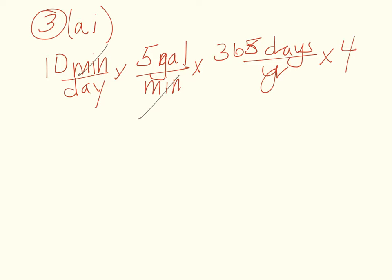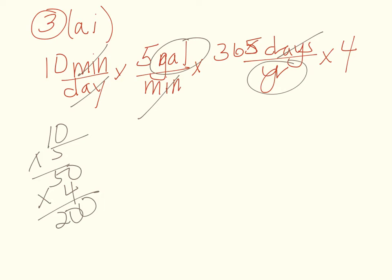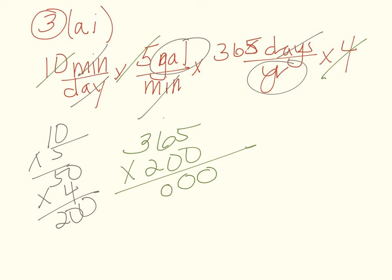So minutes cancel and days cancel and we're ending up with gallons per year for the family. And that's what we want. So I need to do this math. 10 times 5 is 50 times 4, so I've got 200 times 365. I'm going to set it up the other way because it's easier: 365 times 200. Then my zeros go here and now I can do 5 times 2 is 10, bring up the 1, 6 times 2 is 12 plus 1 is 13, 3 times 2 is 6 plus 1 is 7. So my answer comes out to 73,000 gallons per year that the family uses in water.